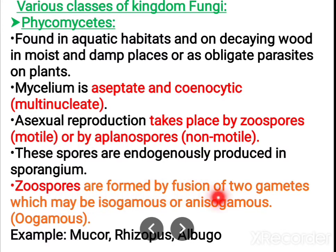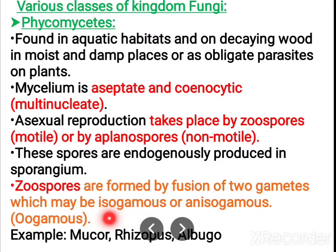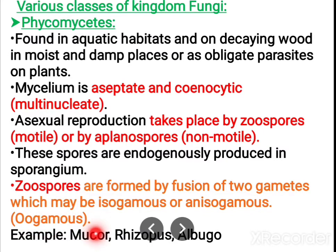Zoospores are formed by the fusion of two gametes. When two gametes fuse, it can be isogamous or anisogamous. Isogamous means both male and female gametes are identical. When they are of uneven size and non-identical, it is called anisogamous. In oogamous, the ovum will be bigger. Examples for phycomycetes are Mucor, Rhizopus, and Albugo — bread mold falls under this category.